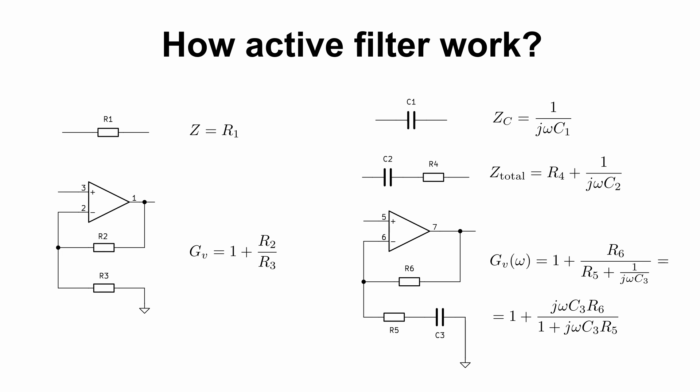The total feedback impedance is the sum of two terms. The first is the resistor's resistance, and the second is the capacitor impedance. Substituting this into the gain expression gives formula for transfer function. This gives a frequency-dependent gain. Low frequencies are attenuated, while mids and highs are boosted.